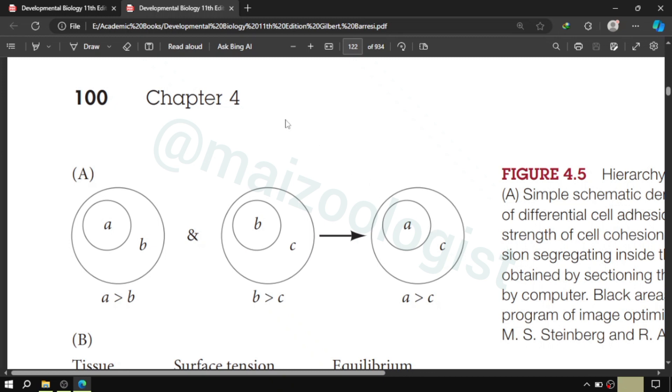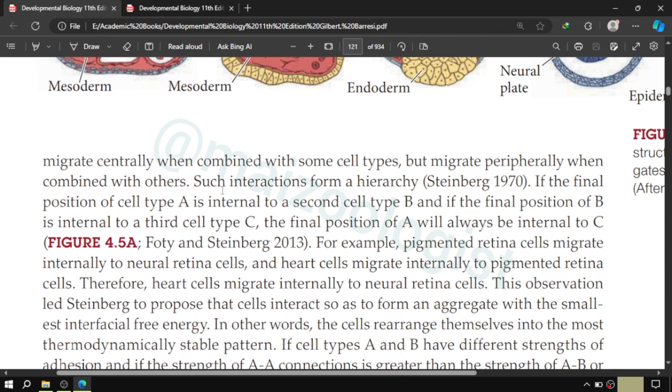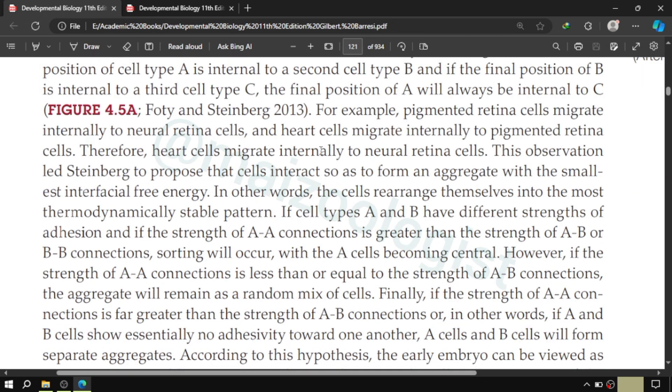So Steinberg, in order to demonstrate it, he took pigmented retina cells that migrate internally to neural retina cells, and he took heart cells that migrate internally to pigmented retina cells. It means heart cells would be the innermost, and then there would be the pigmented retina cells, and then there will be the neural retina cells.